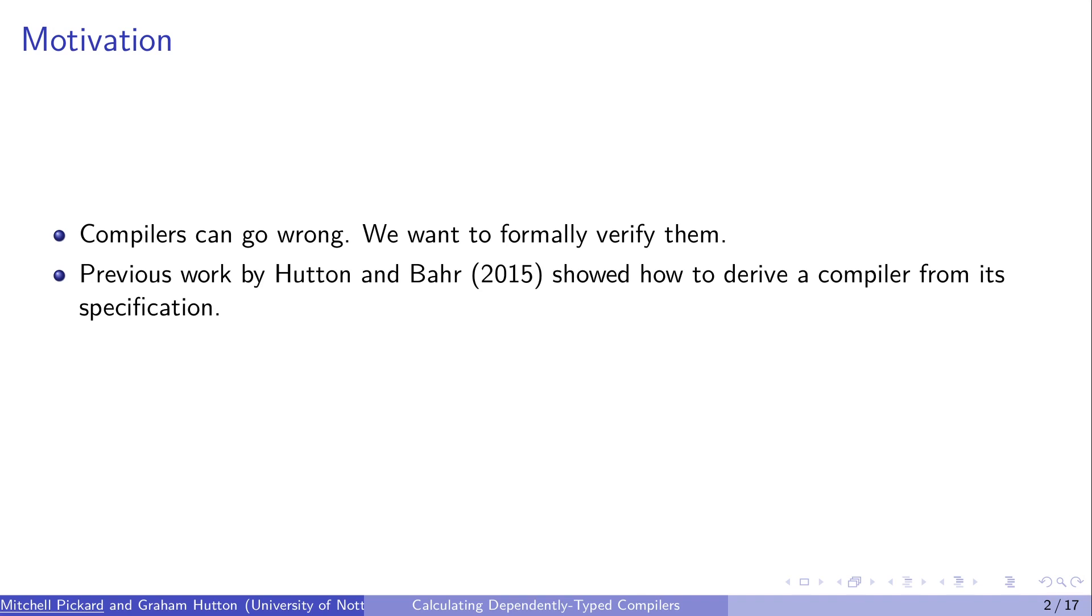Previous work by Hutton and Barr showed an alternative way of formally verifying a compiler. Rather than writing a compiler and then formally verifying it, they show how to derive a compiler from the specification. So given a language specification, you can go through a calculation process, you get a compiler out the other side, and you also get a proof of the formal verification of the compiler for free.